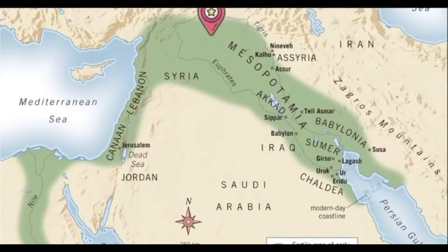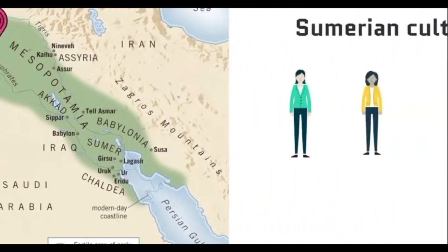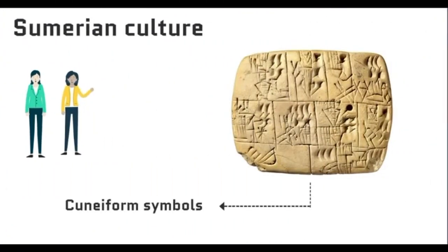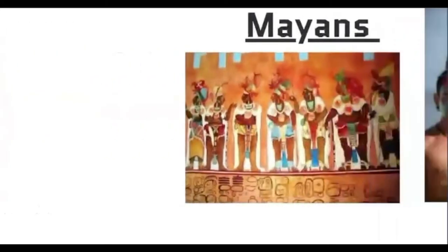The first evidence we have of zero is from the Sumerian culture in Mesopotamia, some 5,000 years ago. They used cuneiform symbols — a logosyllabic script used to write several languages of the ancient Near East.